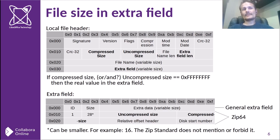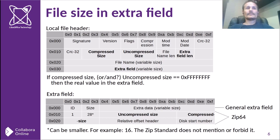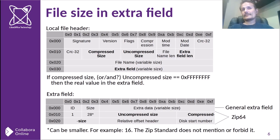That is again a strange thing in the standard — it doesn't mention that this can be smaller. It doesn't even say it has to be 28 bytes; it just lists what kind of fields are there, and that's all. So you cannot be sure what to expect. As I've seen, some files only have 16 bytes of ZIP64 data — it's enough to have just the uncompressed size and the compressed size. It's strange that the standard doesn't forbid it or even mention it.